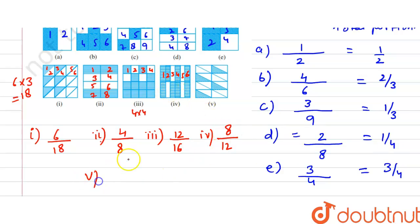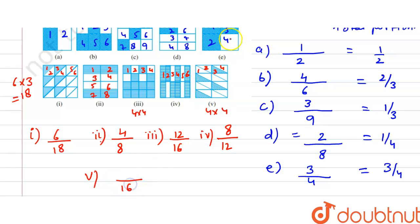For the fifth figure, there are 4 columns in the first row and 4 rows total, so 4 multiplied by 4 equals 16. The shaded portion is 1, 2, 3, 4 — so it is 4/16.